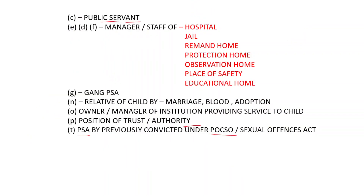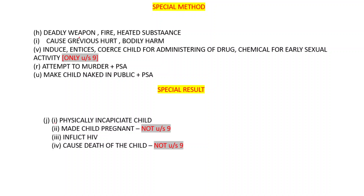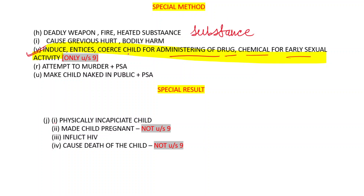So all these are special accused — you have to remember this. Now, what are the special methods? Deadly weapon, fire, heated substance used. Grievous hurt or bodily harm caused. Inducing, enticing, or administering chemical drugs to a child to make them sexually active — note this is given only in section 9, not section 5. Attempt to murder plus penetrative sexual assault. Making a child naked in public and committing penetrative sexual assault.